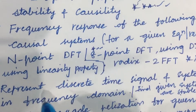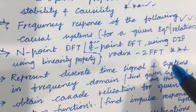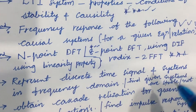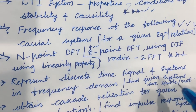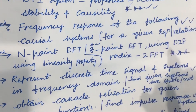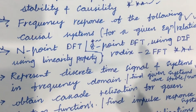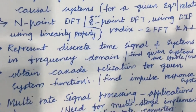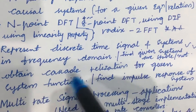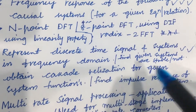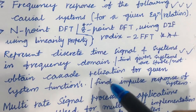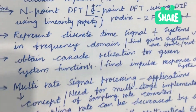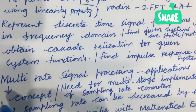Later, represent discrete time signals and systems in the frequency domain to find whether a given system is stable or not — this is also asked many times. I have taken into consideration only a few questions for the course DSP. Next, obtain cascade realization for a given system function, or find the impulse response of a system. Make sure to work out all these concepts.